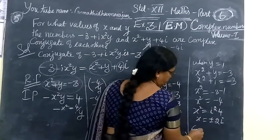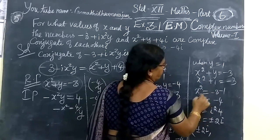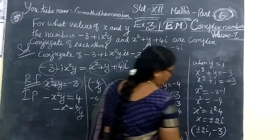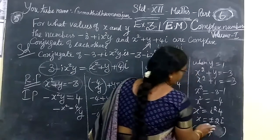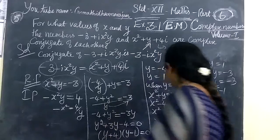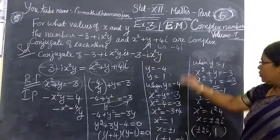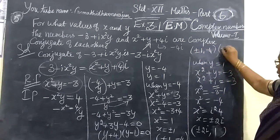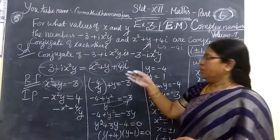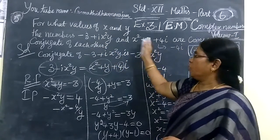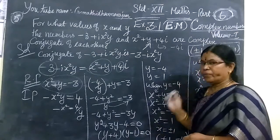Therefore the solutions are: x equals plus or minus 2i, and y equals 1. We test the answer for this. Plus or minus 2i, comma 1 is correct. The other set of solutions is plus or minus 1, comma minus 4. You will have to consider they are equal in terms, and finding that. Thank you.